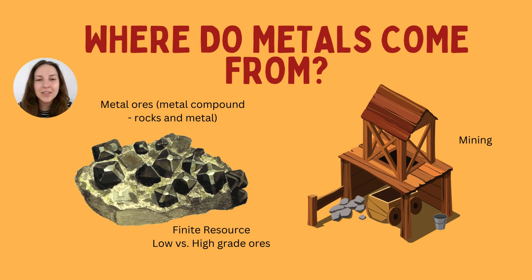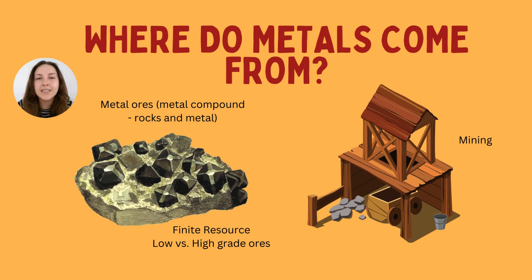Let's get started. First of all, where do metals come from? All the devices we use, any transportation, any cutlery we use — everything that has metals will have originated in one way or another as a metal ore. A metal ore is essentially just bits of metal and rock together, which we get from the earth's crust. We use mining techniques to extract these, and as you can imagine, this is quite a destructive process because a lot of habitat loss occurs as a result.